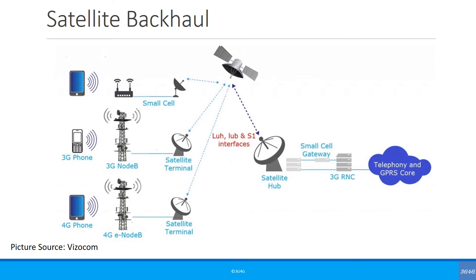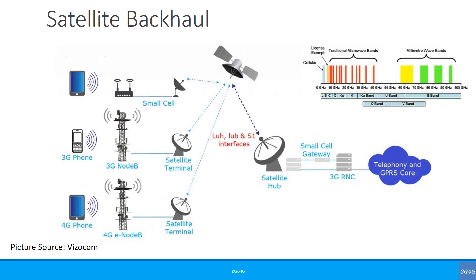Another area is satellite backhaul. Especially in rural and remote locations, satellite backhaul is needed because traditional backhauls cannot reach such areas. Satellite backhaul works very well with 2G and 3G, and reasonably well with 4G. Some optimization is needed to handle headers for 4G, especially to work with VoLTE. But with 5G, there might be some challenges unless we use low-Earth orbit, or LEO, satellites.